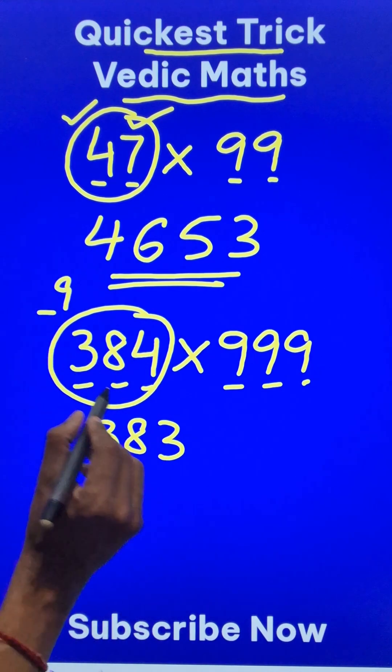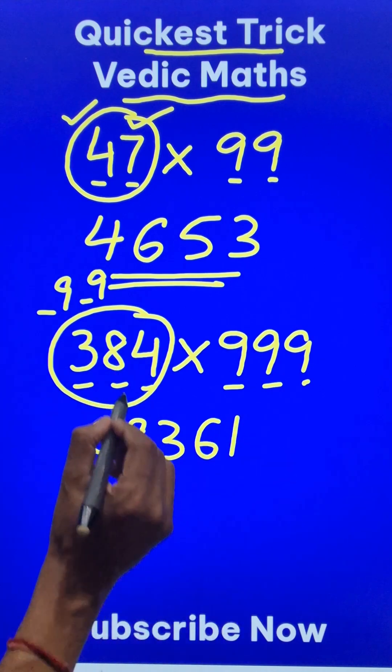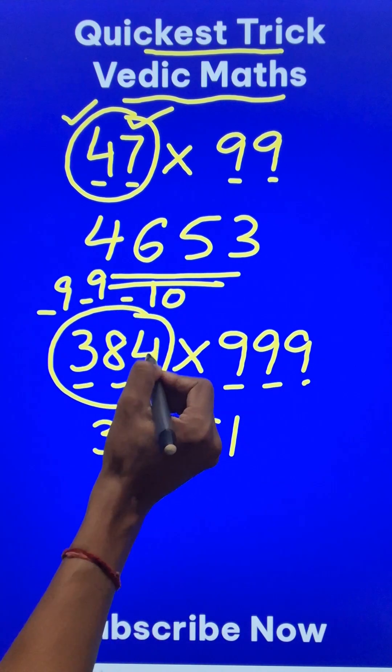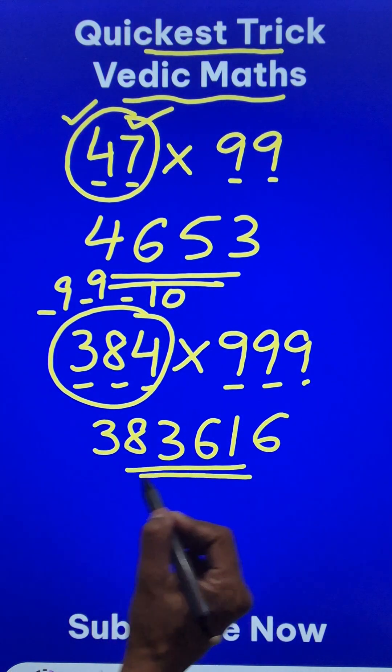9 minus 3 is 6. 9 minus 8 is 1. And 10 minus 4, the last digit is to be subtracted from 10, is 6. And there you have your answer.